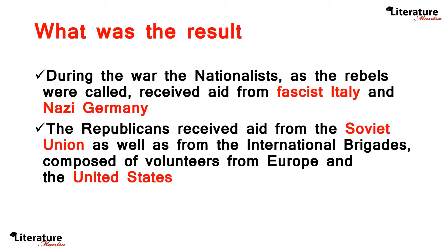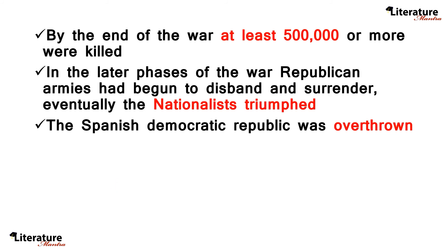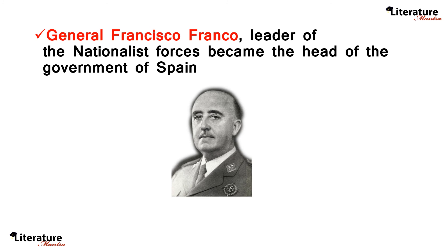During the war, the Nationalists, as the rebels were called, received aid from Fascist Italy and Nazi Germany. The Republicans received aid from the Soviet Union, as well as from the International Brigades, which were composed of volunteers from Europe and the United States. By the end of the war, at least 500,000 people or more were killed. In the later phases of the war, Republican armies had begun to disband and surrender, and eventually the Nationalists triumphed. The Spanish Democratic Republic was overthrown, and General Francisco Franco, leader of the Nationalist forces, became the head of the government of Spain.